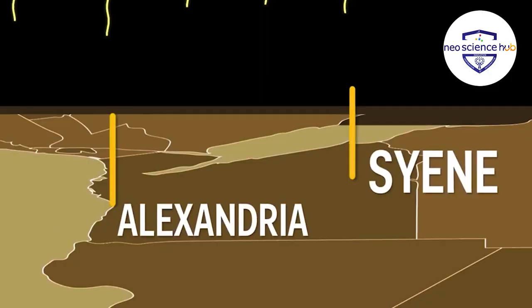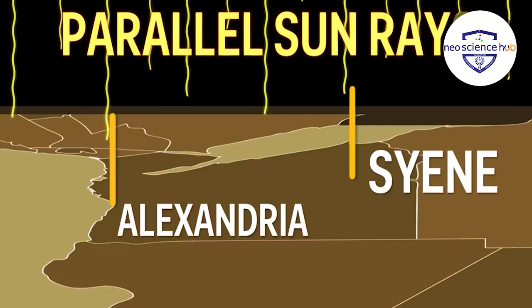If the sun's rays are parallel and there was a shadow at 7 degrees at Alexandria and none at Saini at the same time, it means that the earth's surface could not be flat.